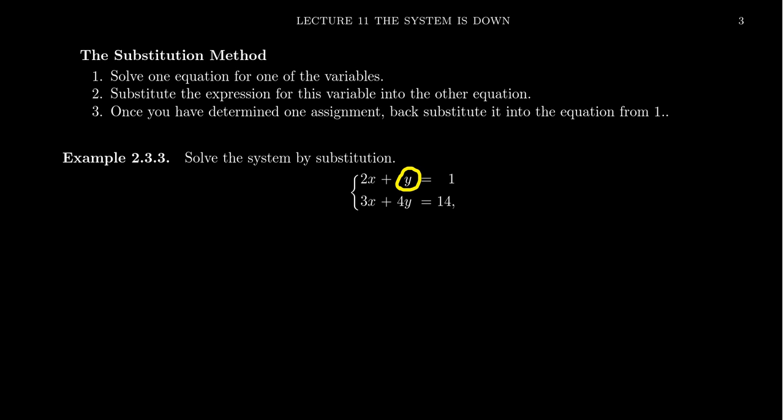So maybe you choose y in the first equation. When you do that, you'll transform the equation into y equals 1 minus 2x. So you solve for one of the variables.